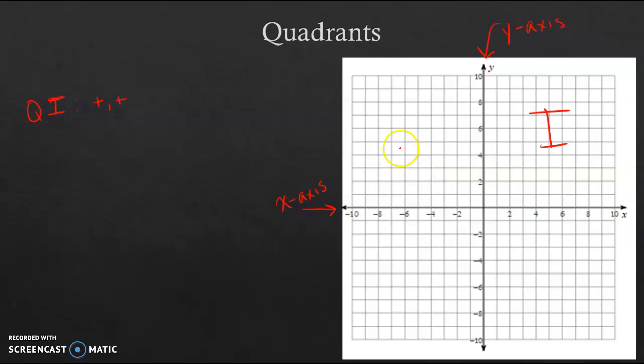So Quadrant 2 is made up of negative x values but positive y values. So negative x, positive y. And then we go into Quadrant 3. Quadrant 3 has negative x values and negative y values.